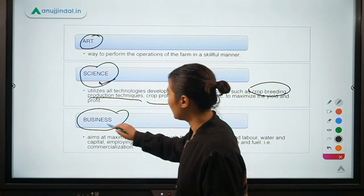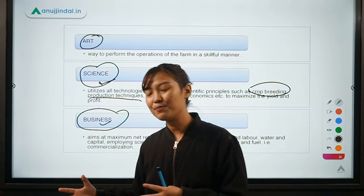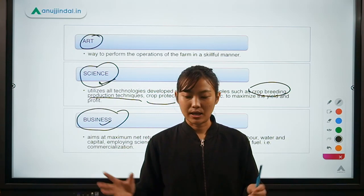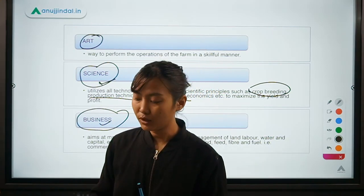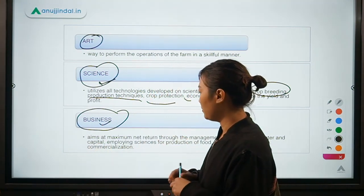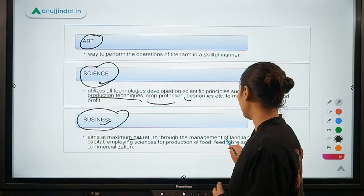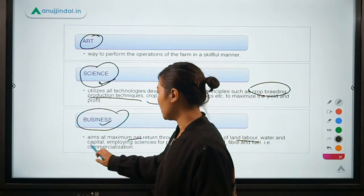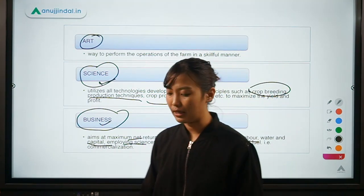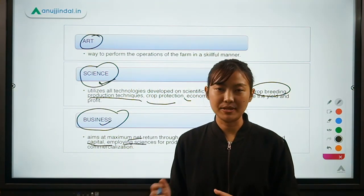Agriculture is also a business. In business we think about profits, and similarly in agriculture, by putting in less input and managing natural resources and capital properly, you get the best net return or profit. It aims at maximizing the net return through proper management of land, labor, and water, while employing the science of producing food, feed, fiber, and fuel through commercialized cultivation.